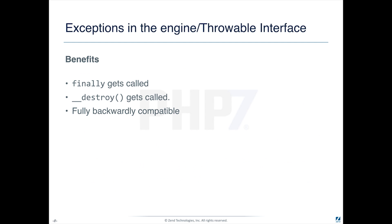Benefits: finally now gets called. __destruct now gets called. And because of the way they've architected it, everything is fully backwardly compatible. If you're already catching Exception, you don't have to worry about anything — it's not going to start catching new exceptions. If you're just catching the raw Exception and dealing with it based on the message or the error number coming back, that'll still work. You won't catch the new stuff, but the old stuff won't break. That's what we mean by fully backwardly compatible.